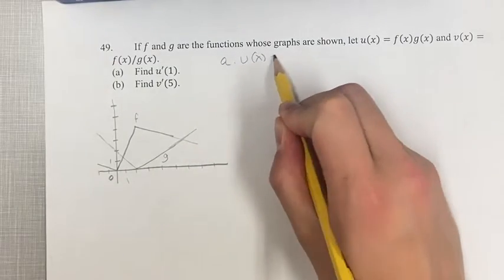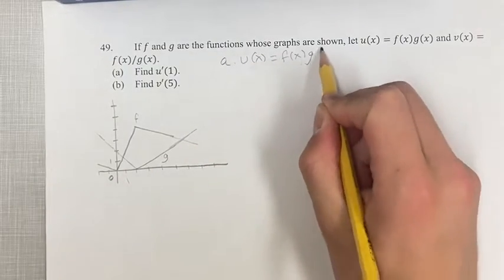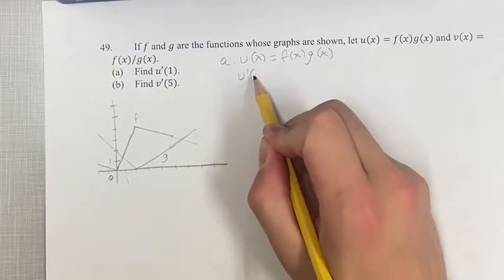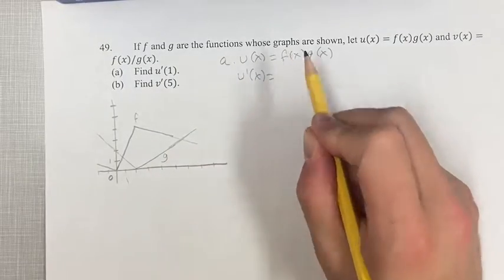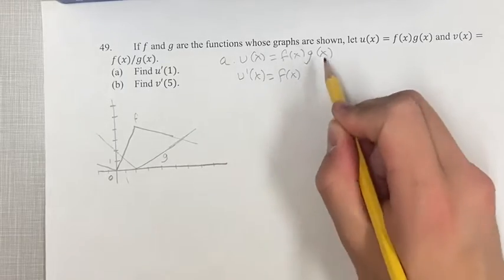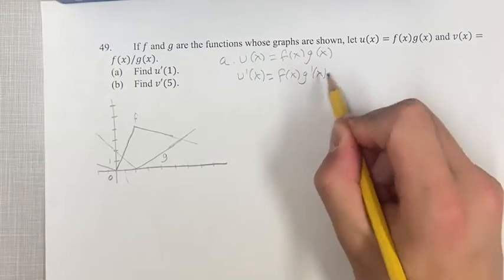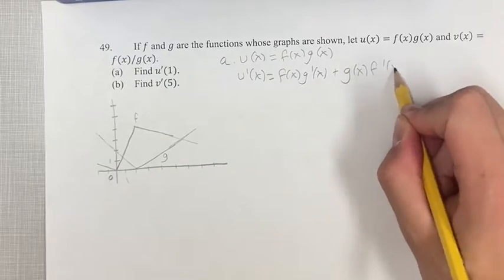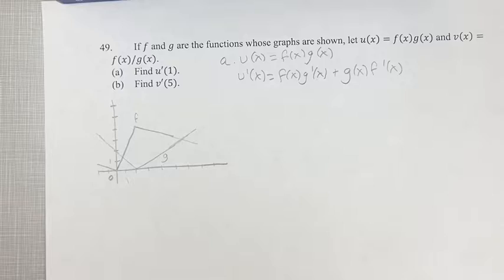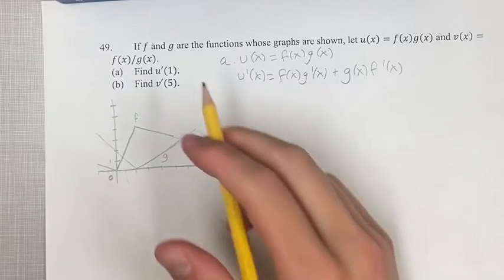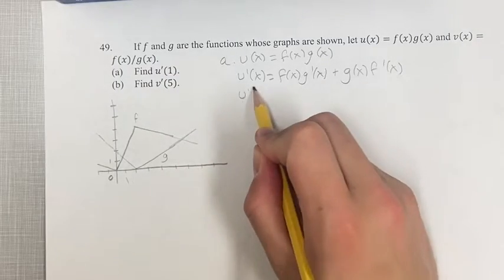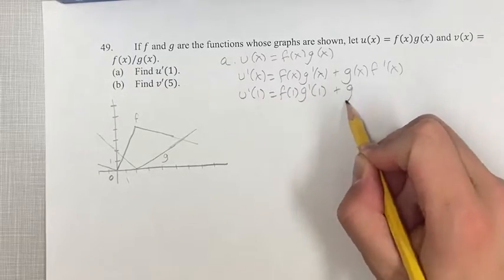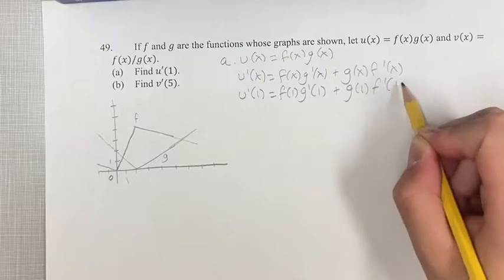Since u of x equals f of x times g of x, we have multiplication, so we use the product rule. The derivative is: the first, f, times the derivative of the second, g prime, plus the second, g, times the derivative of the first, f prime. At x equals 1, this becomes f of 1 times g prime of 1, plus g of 1 times f prime of 1.